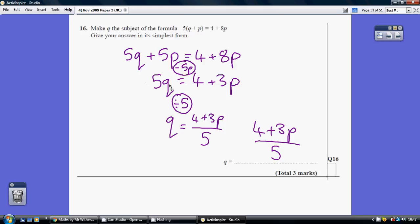So q is nearly on its own. How do we undo a times by 5? We divide by 5. Now be careful, we need both of these terms to be divided by 5, so the simplest way to reflect this is just to put it all over 5. That's your final answer.